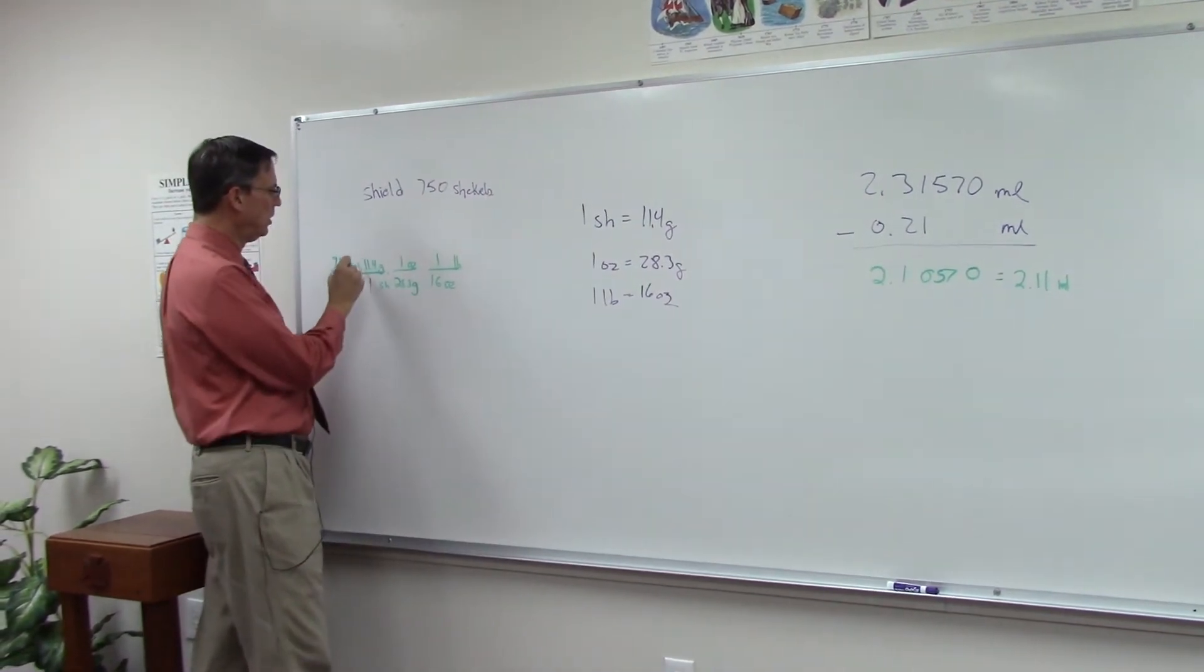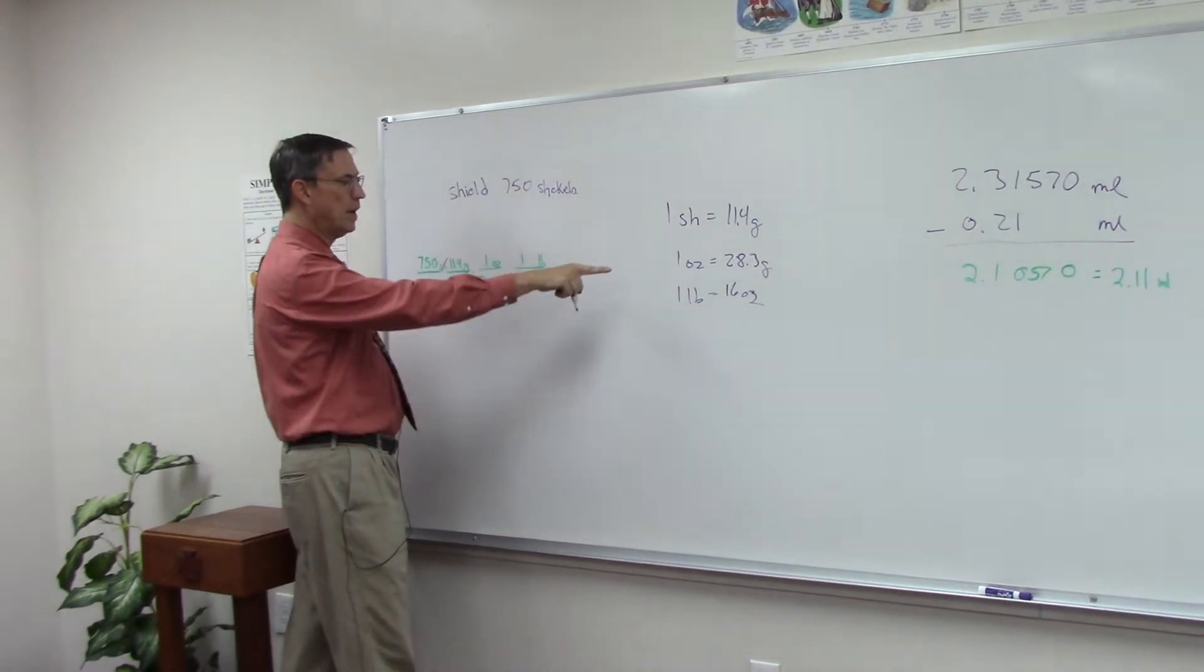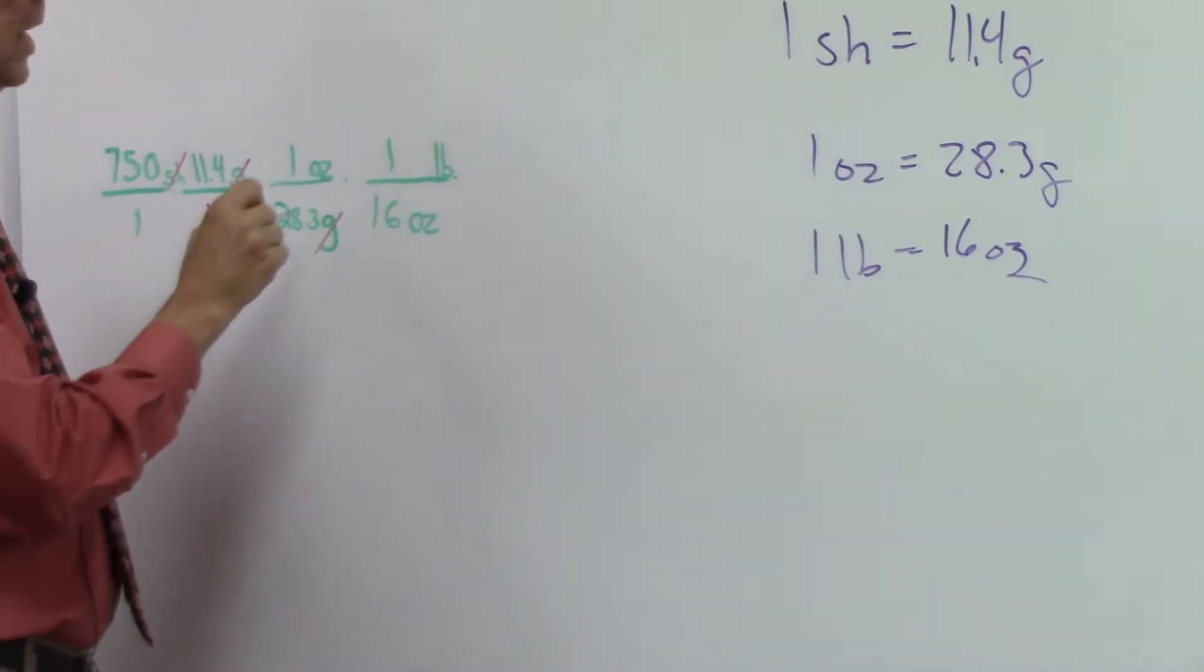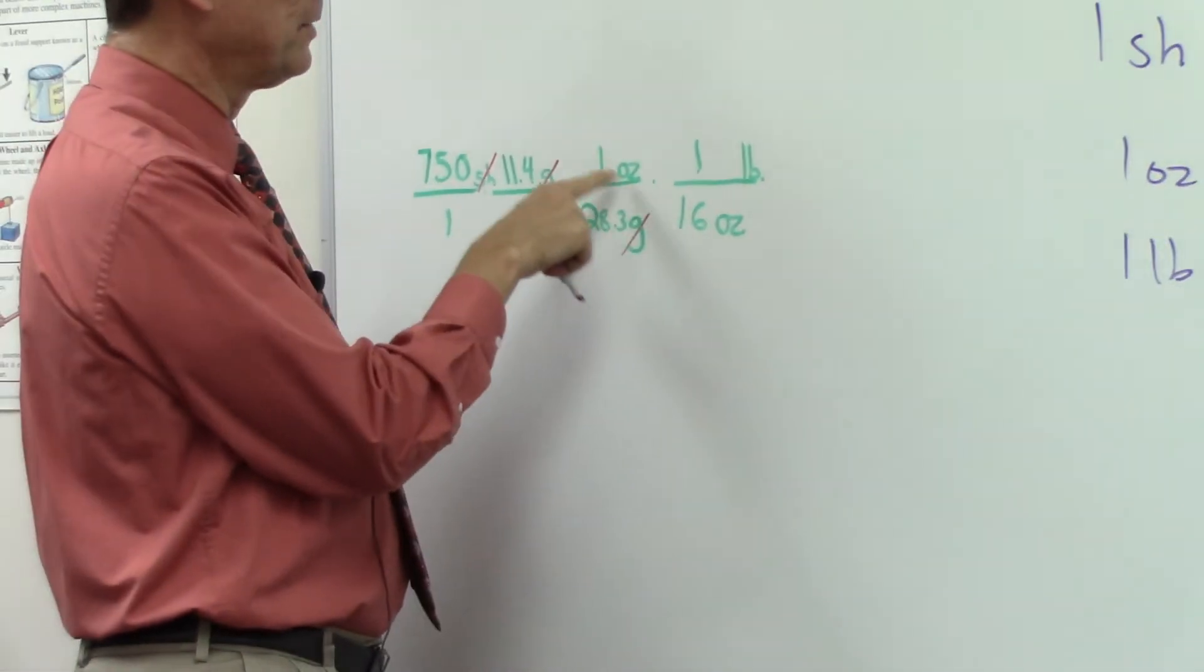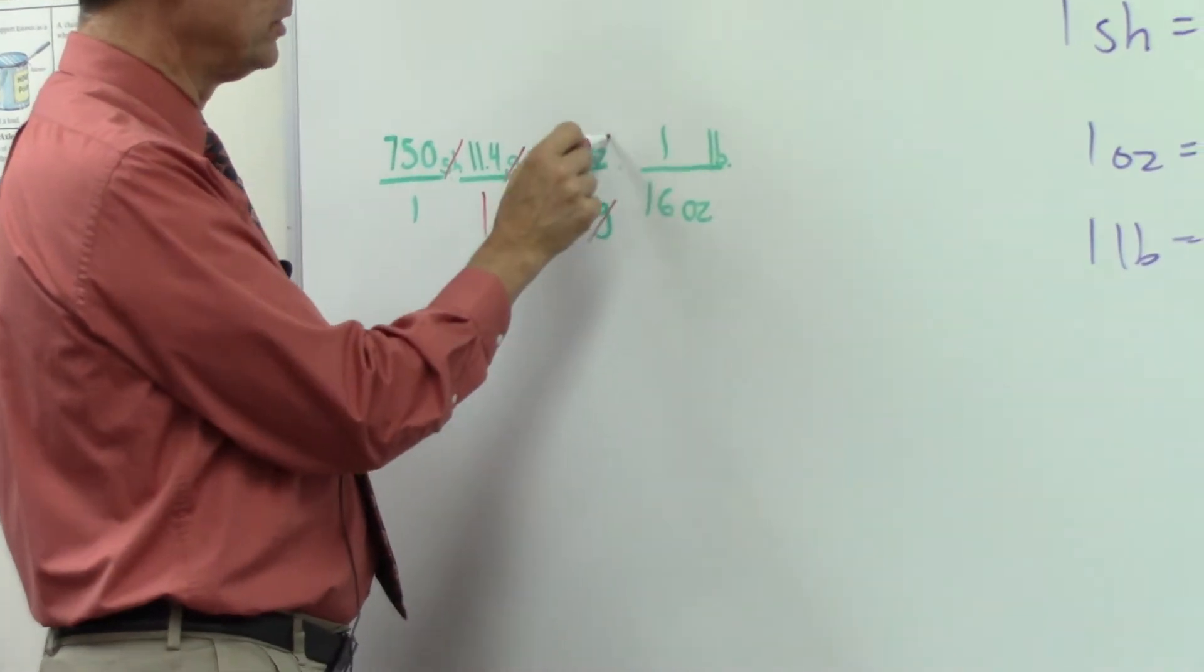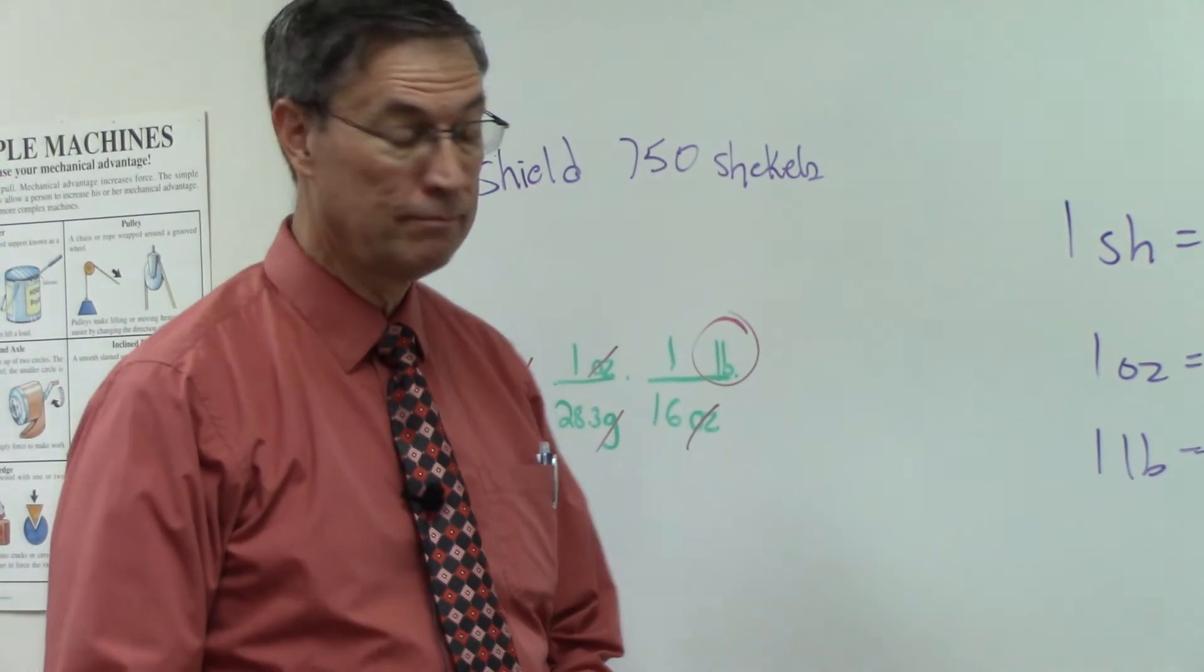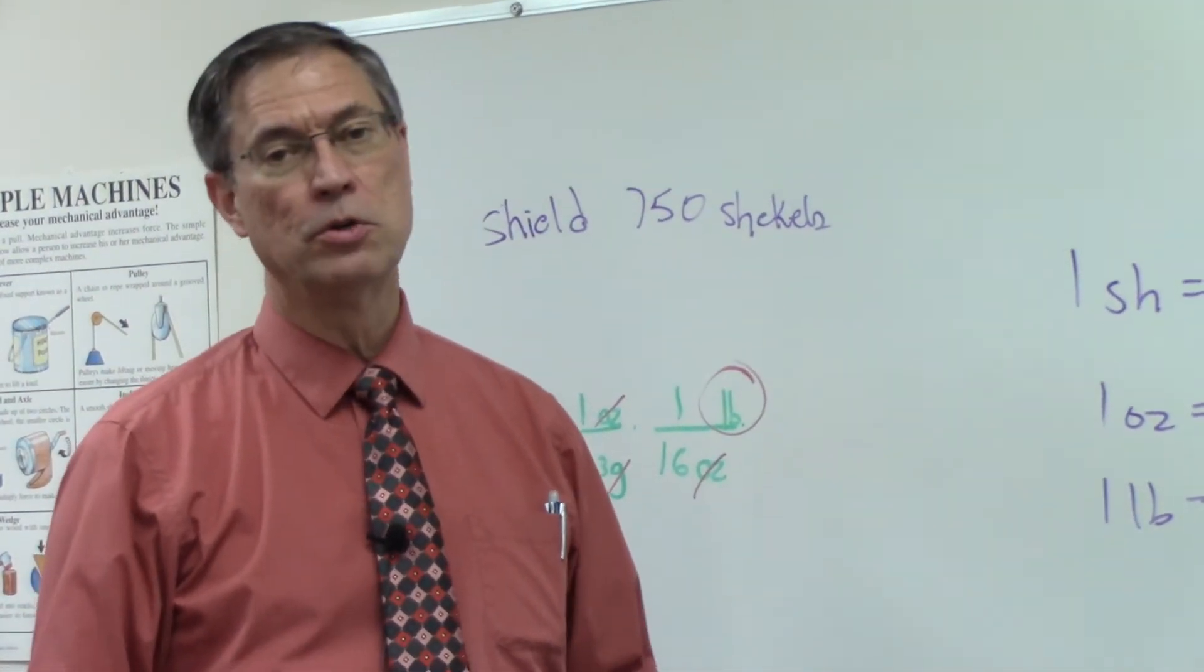Whatever we're converting into goes on the top. So this will be 1 shekel down here, so shekels cancel shekels. Now I'm in grams. Then I put grams on the bottom so that grams cancels grams. One ounce is 28.3 grams. Now I'm going to cancel ounces and go to pounds. I can cancel that, and my answer comes out in pounds.